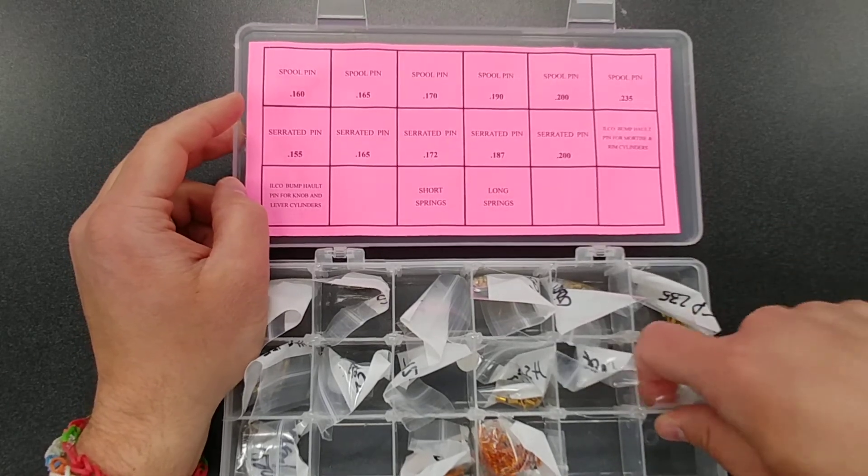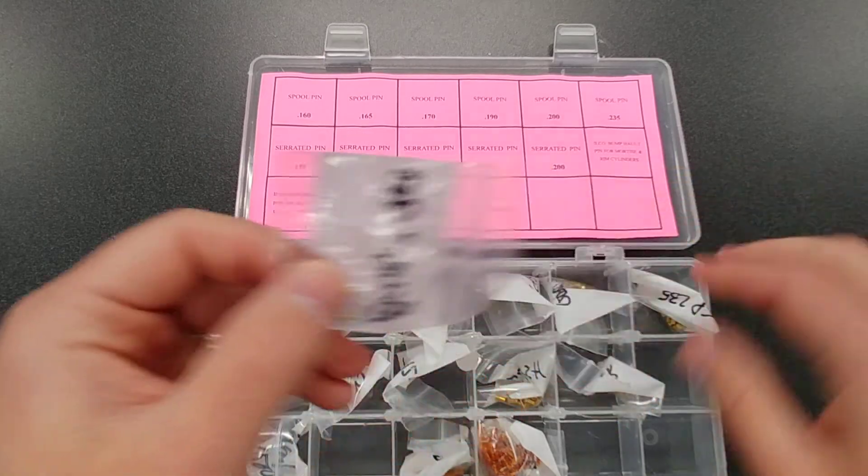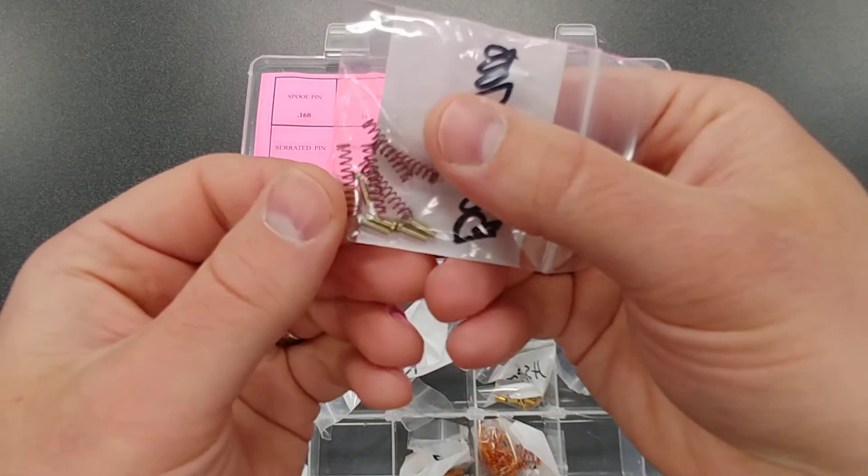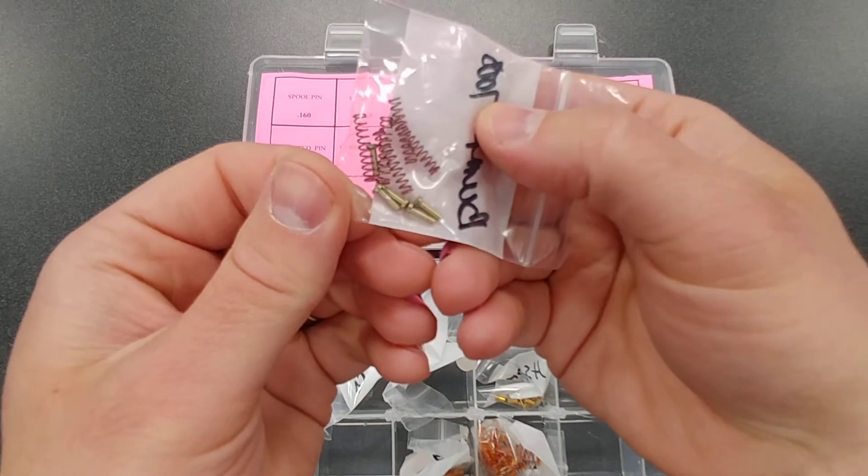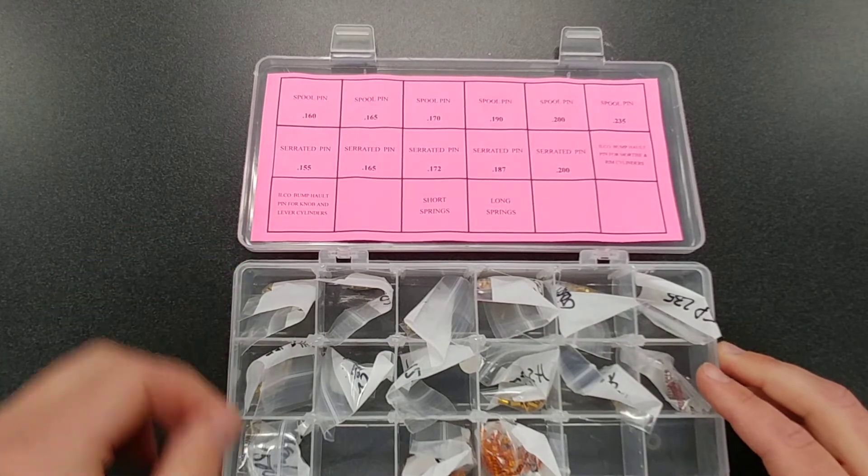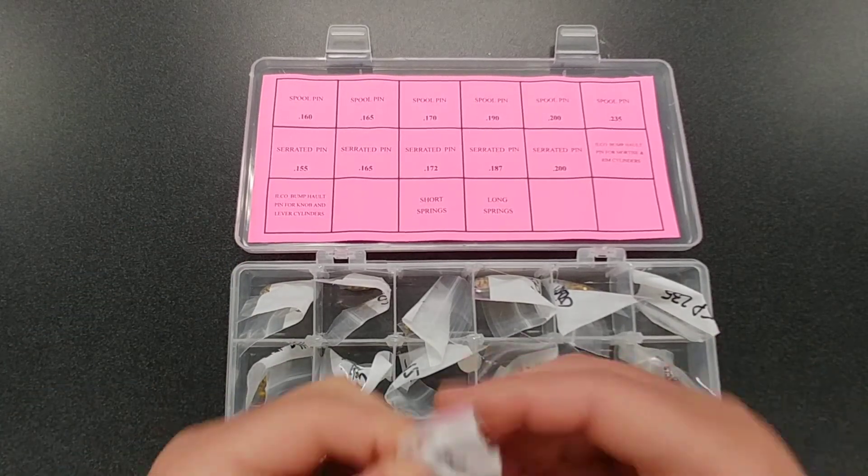It's a little different. Now it's all going to come in these nice little bags here to make sure we keep them organized for you. But these are what the Ilko bump halt pins look like. And then also comes with the Ilko bump halt pins for knobs and levers. You can see that right there.